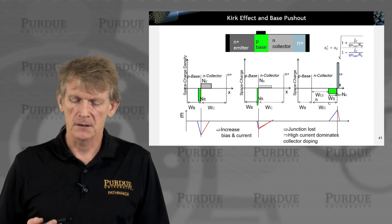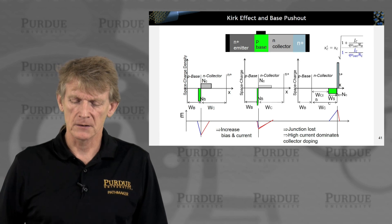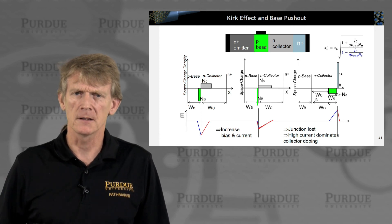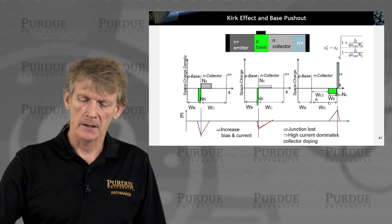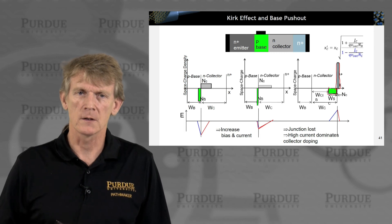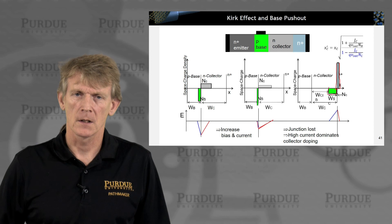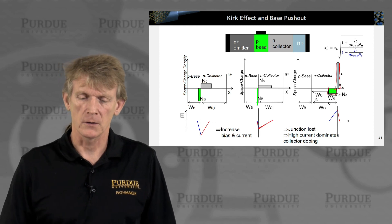You can imagine that the electric field at some point is actually reaching the collector. So the junction, again, is lost. And if the junction is lost, then the current is dominated by the collector doping. And so you suddenly have a charge imbalance here that is very different from what you started out within sort of a mid-range applied voltage and current flow.